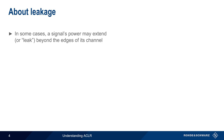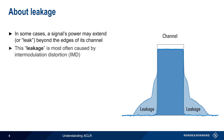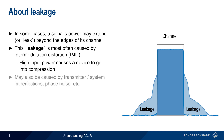It is, however, not uncommon for some signal power to extend or leak beyond the edges of its assigned channel or bandwidth. This leakage is most often caused by intermodulation distortion, which can occur when active devices, such as amplifiers, are compressed due to high input power. There are also other causes of leakage, including excessive phase noise, imperfections in the transmitter or system, etc.